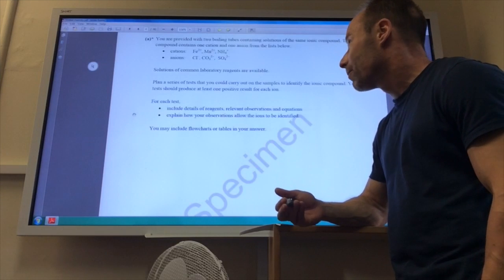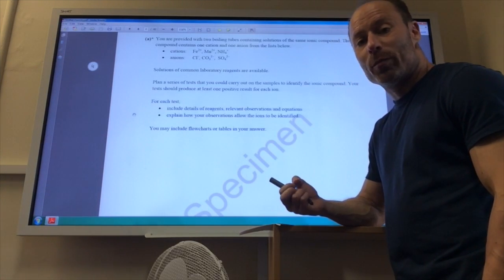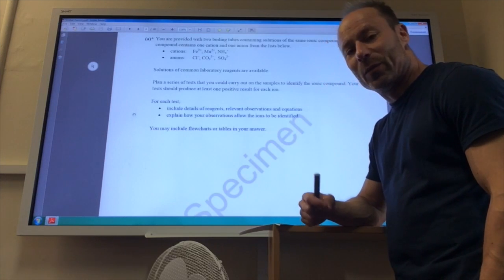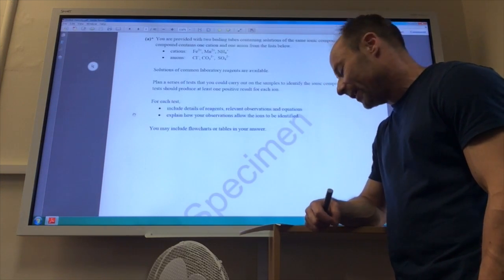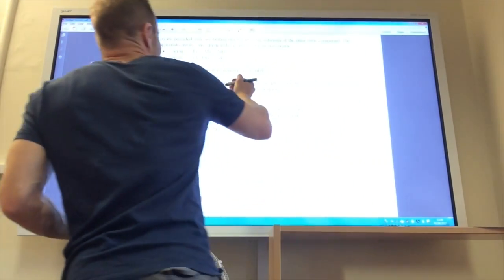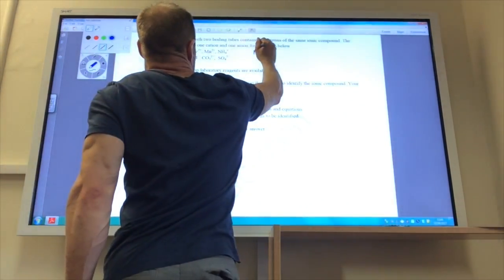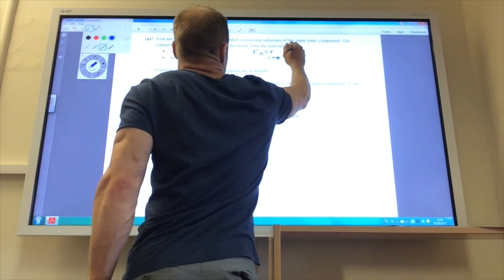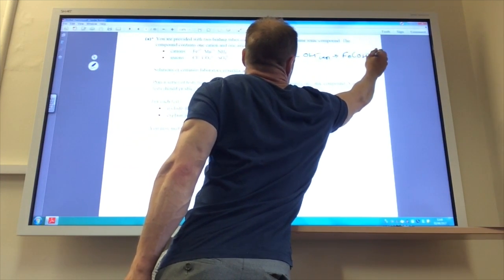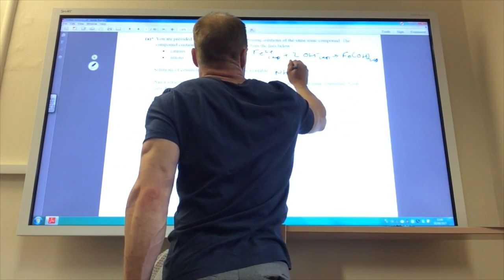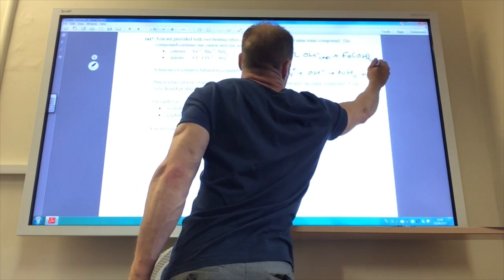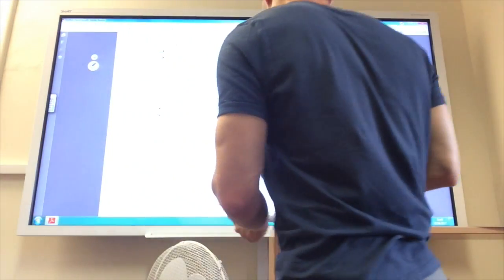For Fe2+, you would see a green precipitate. For Mn2+, you would see a pinky precipitate. And for the ammonium ion, you warm it with sodium hydroxide. You test the gas produced with red litmus paper and the red litmus paper will turn blue because ammonia gas is produced. The equations are pretty straightforward. For the iron, it's Fe2+ aqueous plus 2OH- aqueous gives you Fe(OH)2 solid. For the ammonium one, NH4+ plus OH- gives you NH3 plus H2O. And of course, it's the ammonia which turns your litmus paper blue.